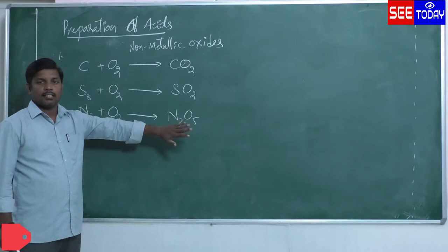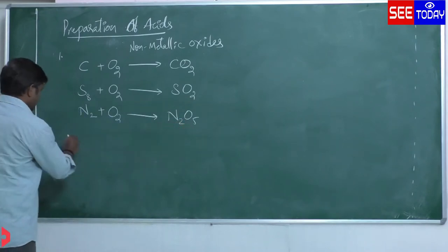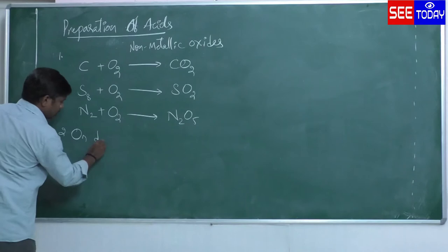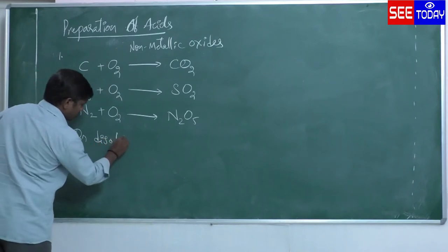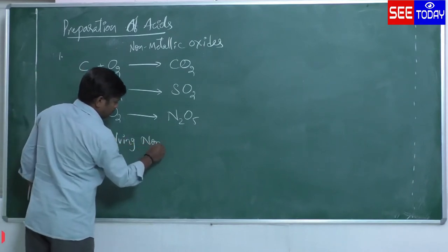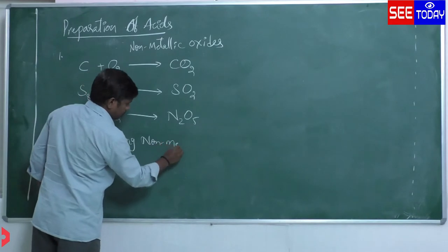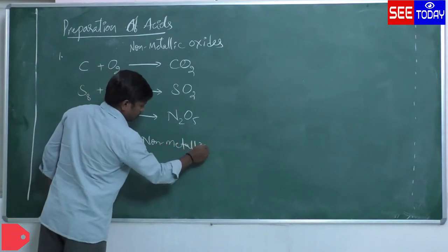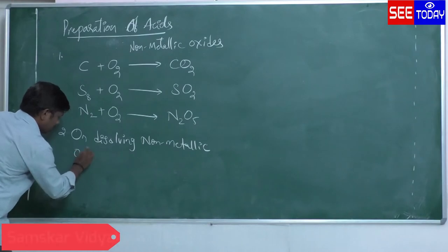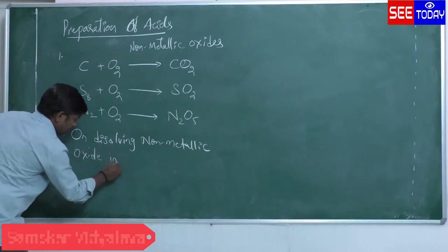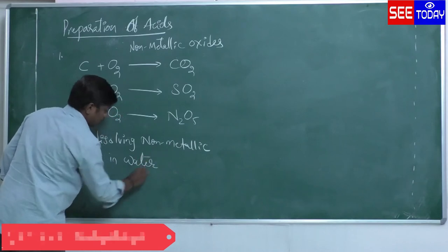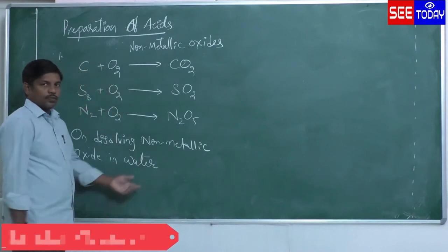This is the first preparation method of acids — non-metallic oxides act like acids. The second method is: on dissolving non-metallic oxides in water, they form their respective acids.